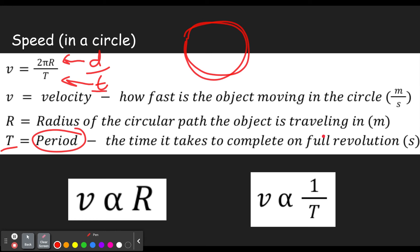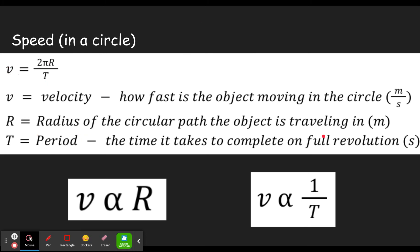The velocity is how fast the object is moving in the circle. We're calculating average speed here, and assuming it's at constant speed, that's its velocity at every point around the circle. We look at two relationships: there is a direct relationship between velocity and the radius, and there is an inverse relationship between velocity and the period. Let's take a look at what that looks like in the concept builder.